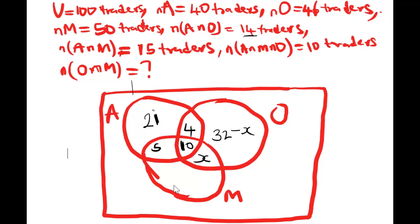For mangoes, we have 50: 50 minus 5 is 45, minus 10 is 35. So the mangoes-only region will be 35 minus x. Our universal set is 100.